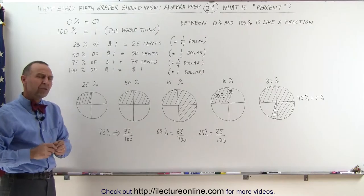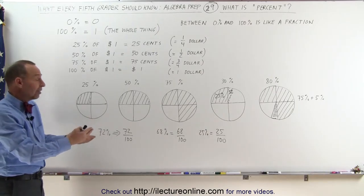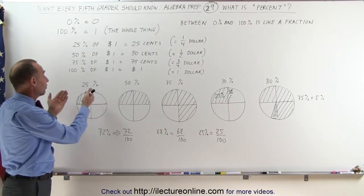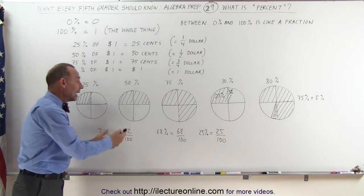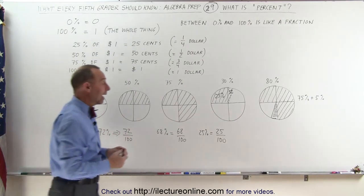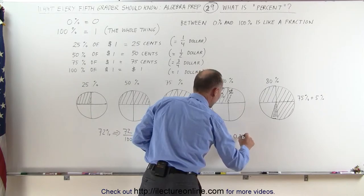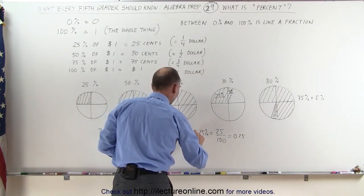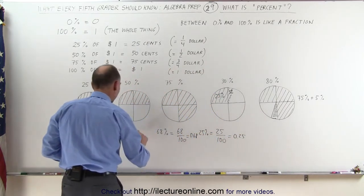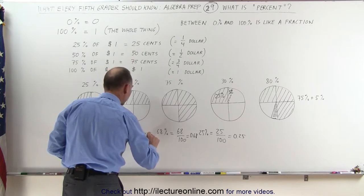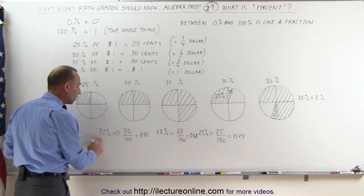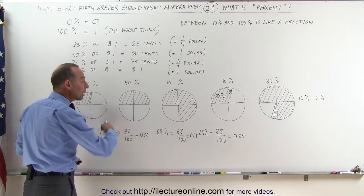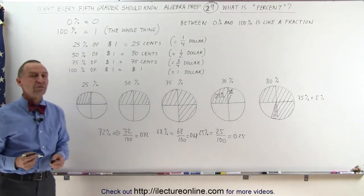So 25% or percent in general is simply another way of expressing a fraction or expressing a decimal because I can write this as 0.25, I can write this as 0.68, and I can write this as 0.72. Now you can see that percent, fractions, and decimals are really all the same thing in different forms.